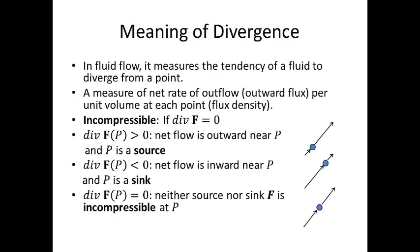Let's talk about the meaning of divergence. In fluid flow, it measures the tendency of a fluid to diverge from a point. It's a measure of the net rate of outflow, or outward flux, per unit volume at each point. Or another way to think about it is flux density.